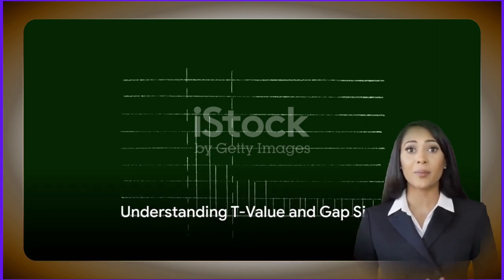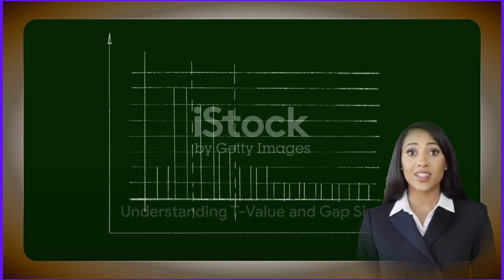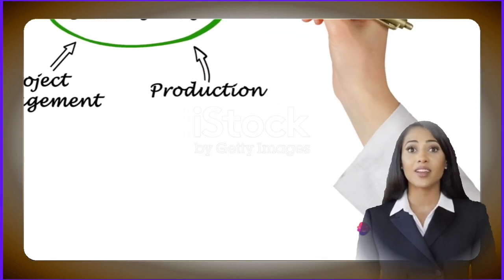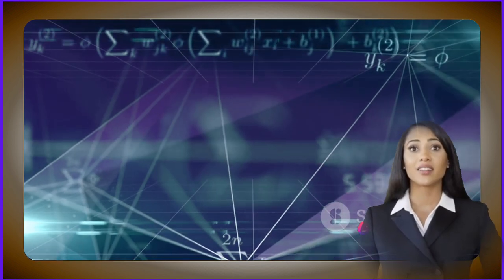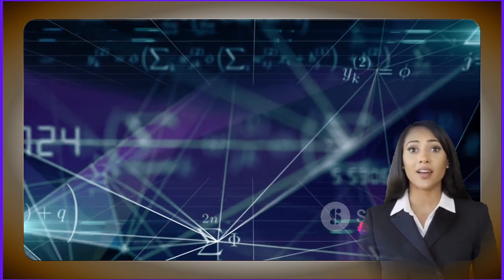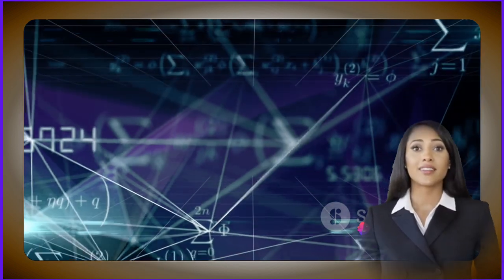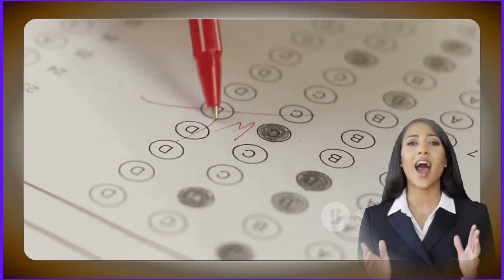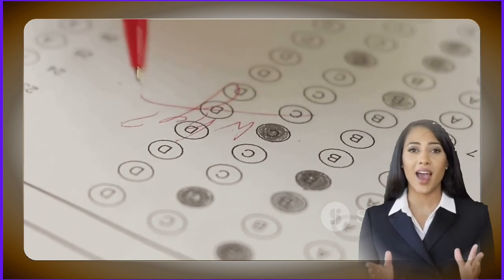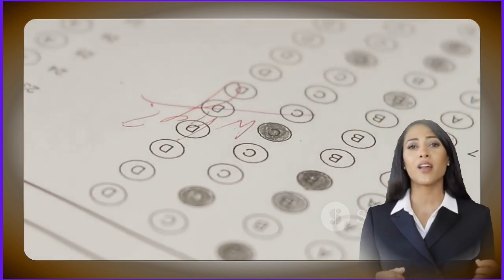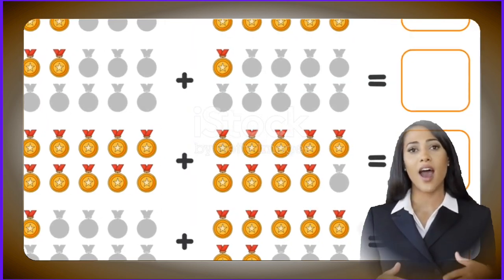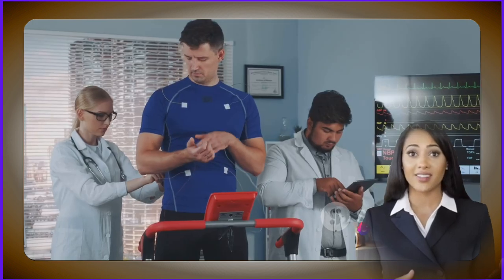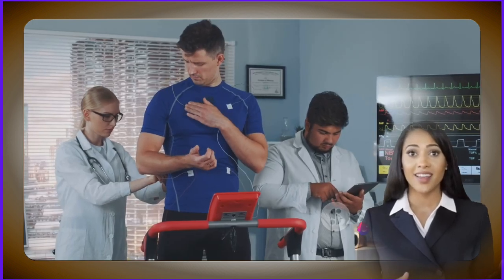Next, the degrees of freedom, often abbreviated as df, relate to the amount of information in your data. More degrees of freedom mean more information and thus a more reliable t-test result. Think of it as the number of players in a game — more players mean more data points, leading to a more comprehensive picture of the match.